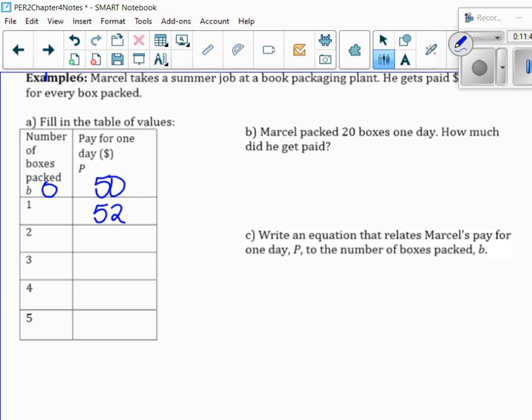If he packed two boxes, that would be $52. Because remember, he's getting paid $50 and then $2 for every box. So, then what happens each time? He gets two more dollars. Do you see how I'm filling out the chart? What's happening each time? It is going up by two. So, Marcel packed 20 boxes in one day. So, we should come up with the equation even though it's asking for how much for the 20 boxes.